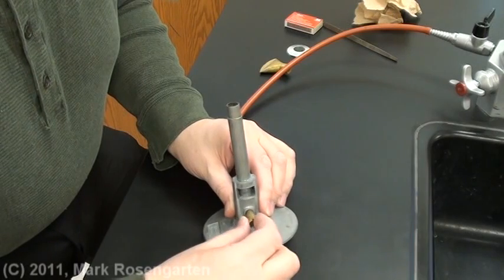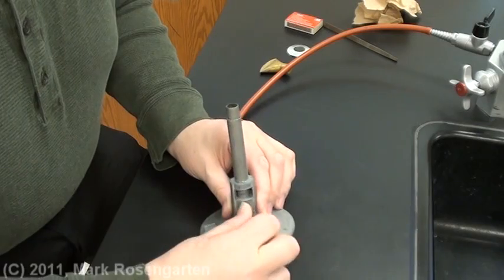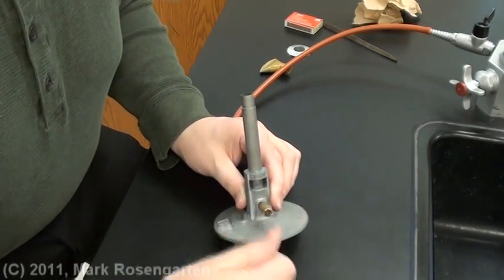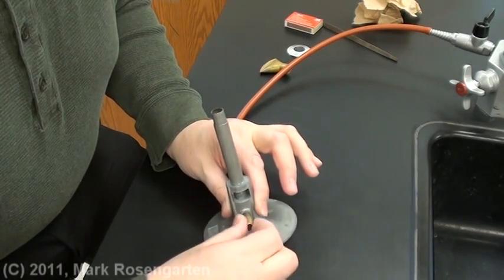The gas control knob is shut when you turn it righty tighty and it won't go anymore. You don't want to overtighten it because you don't want to have to turn it too hard to open it again. So righty tighty is off, lefty loosey lets more in.